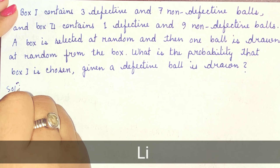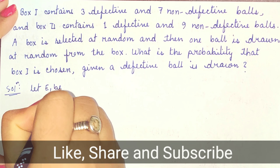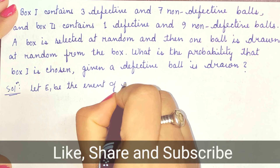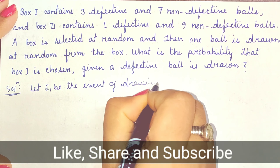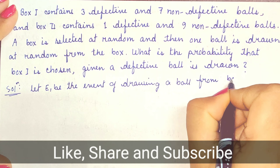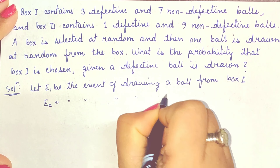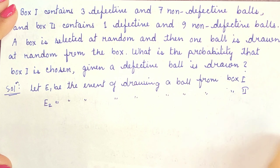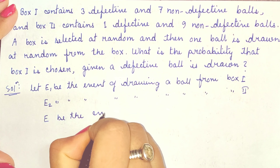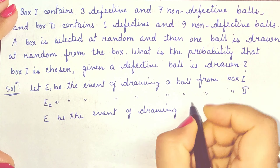Let's start the solution. First of all, we assume that E1 be the event of drawing a ball from box 1, E2 be the event of drawing a ball from box 2, and E be the event of drawing a defective ball.